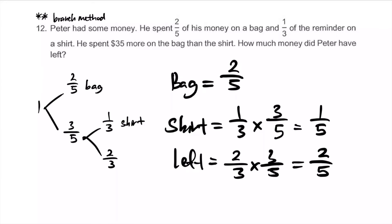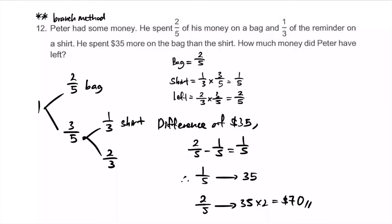We got the fraction of the total for each. We're told the difference between the bag and the shirt is 35 actual dollars. Doesn't that mean 2u minus 1u is 35? So 1 unit represents 35 dollars. 2 units minus 1 unit, 1 unit. 1 unit, 35 dollars. Question: how much did you have left? What's left is 2 units. Therefore, 1 unit equals 35 dollars, 2 units equals 70 dollars left. Branch method, level 2.